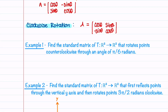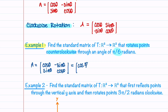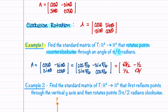Let's walk through two examples. In our first example, we're asked to find the standard matrix that rotates points counterclockwise through an angle of π/6 radians. The standard matrix is A equal to [[cos θ, -sin θ], [sin θ, cos θ]]. We substitute π/6 for θ, and recall that cos(π/6) is √3/2, sin(π/6) is 1/2. So our matrix becomes [[√3/2, -1/2], [1/2, √3/2]].